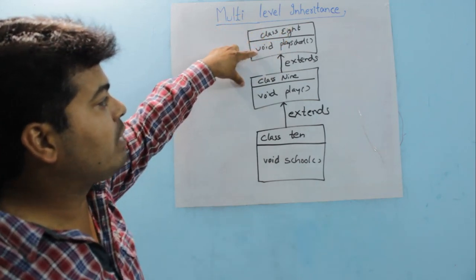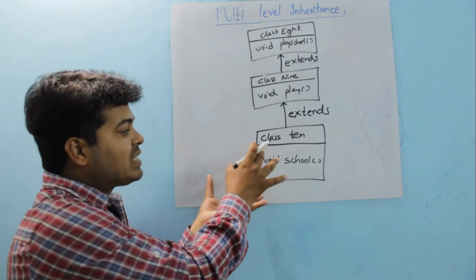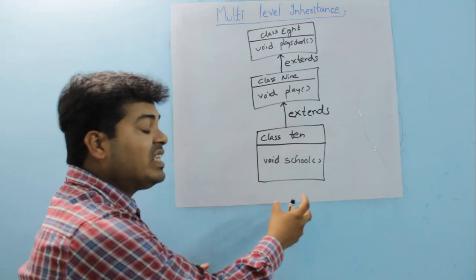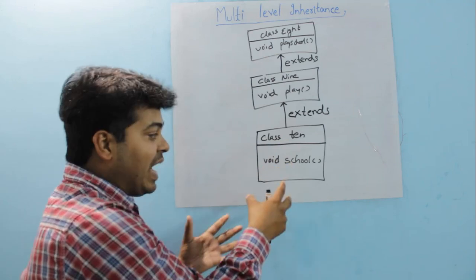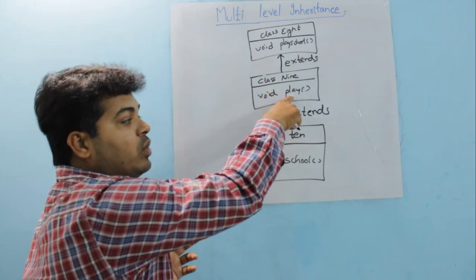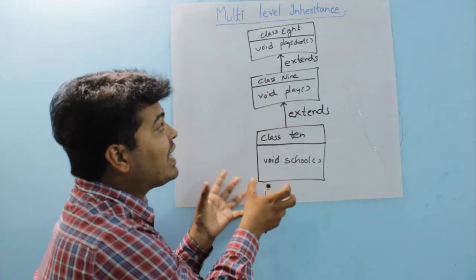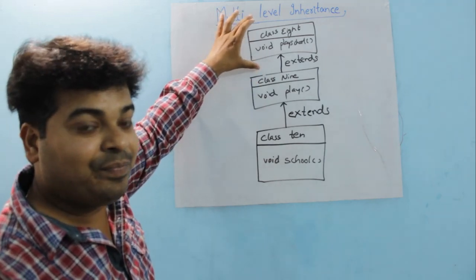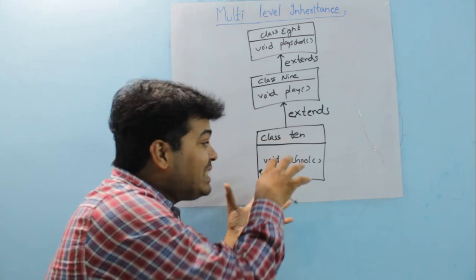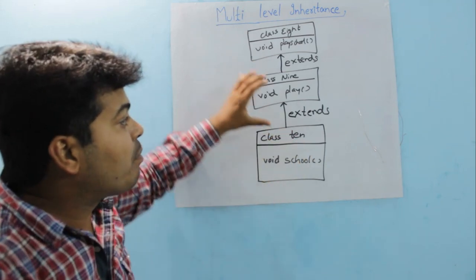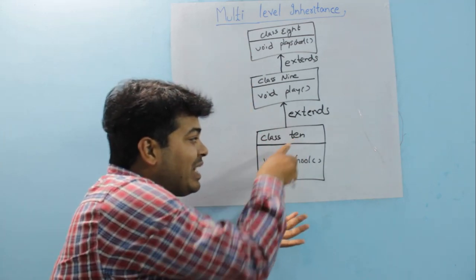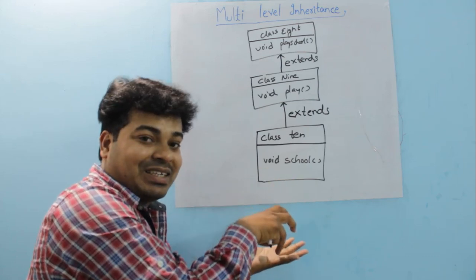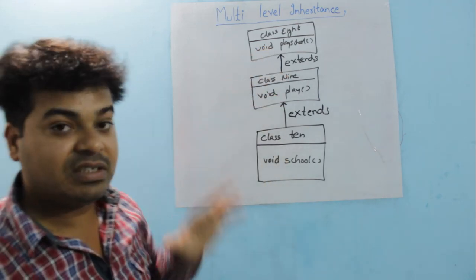My super-most class is class 8 with the non-static method 'play school'. To access all methods, I create an object for class 10 and use its reference variable to call all three methods — 'school', 'play', and 'play school'. I do not need to create objects for class 9 or class 8 separately.